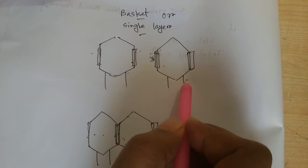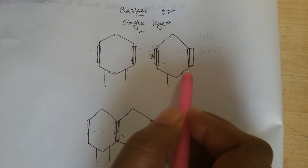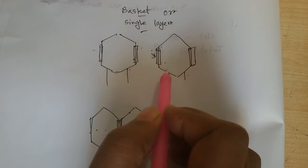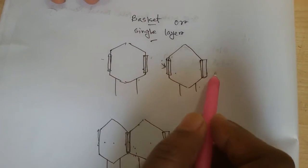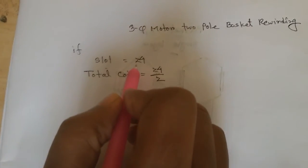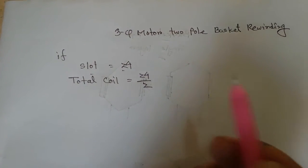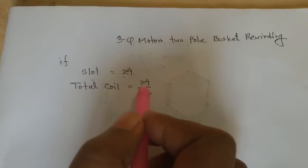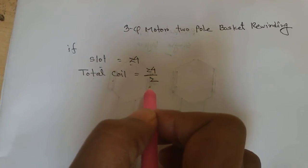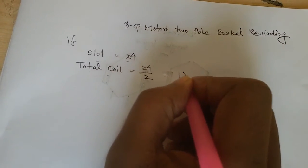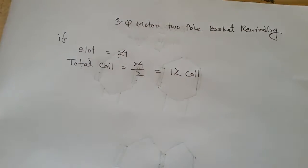Single layer rewinding, one coil needs to set two slots because one side set one slot and other side set other slot. So here, slot number 24. So per coil need two slots. So total coil equals total slots divided by 2, so total is 12 coils.